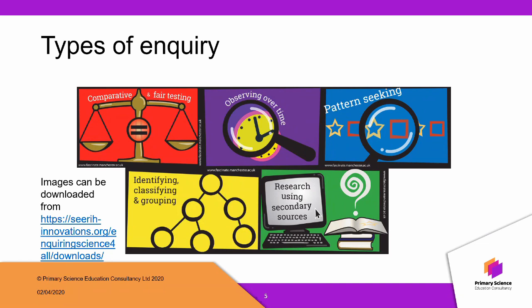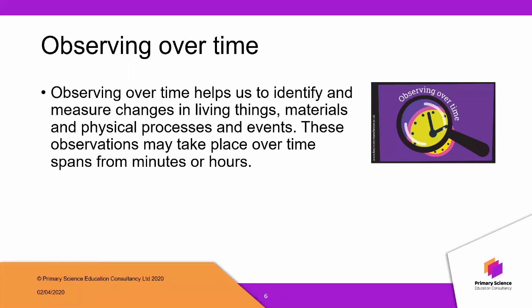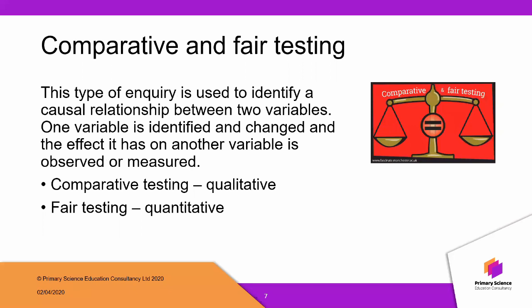Starting with the first of the five types: observing over time. This is watching to see how something changes over a period of time — it could be over a couple of minutes, hours, days, weeks, or even over the year, particularly with seasonal change. This could be looking at how plants change, how ice cubes change, or temperature of water over a period of time.